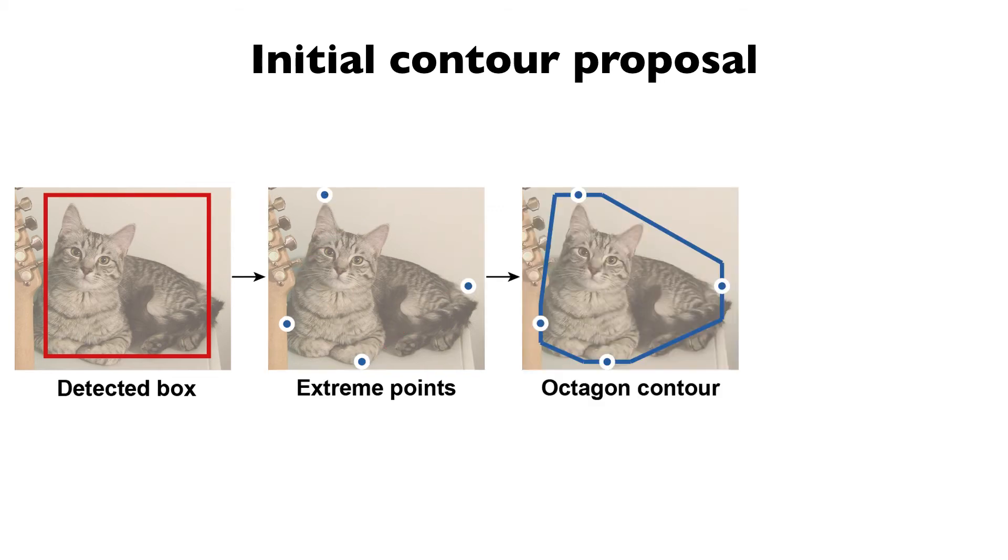The object extreme points are top, leftmost, bottom, and rightmost pixels in an object. Inspired by ExtremeNet, we construct an octagon based on the extreme points, which generally encloses the object tightly.